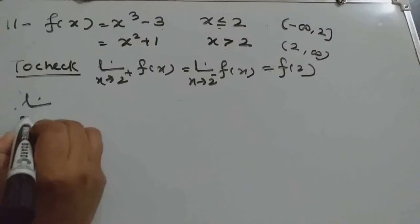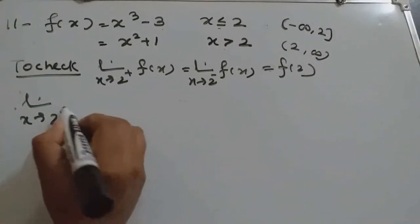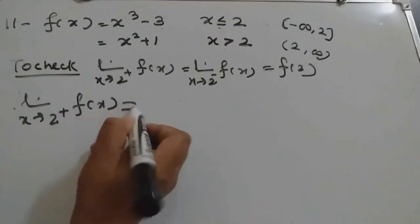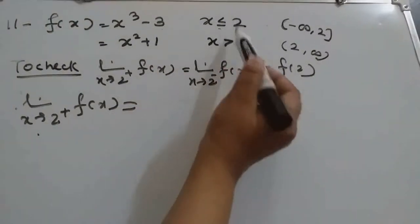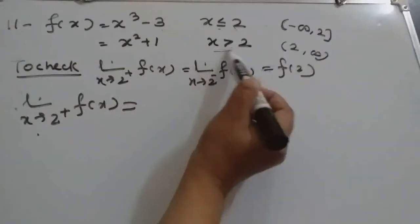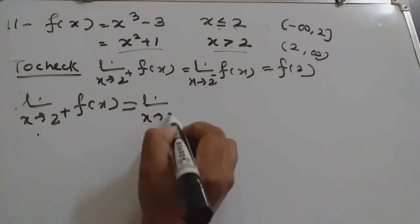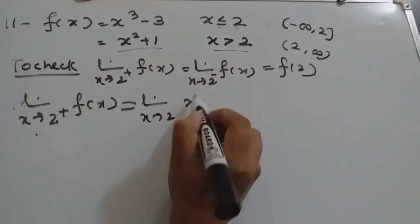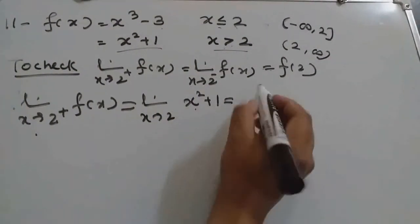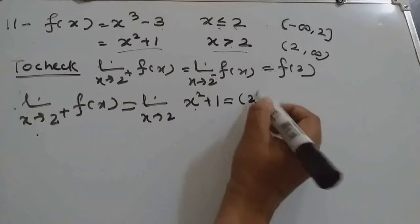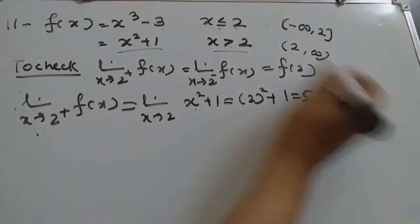We will find limit x tends to 2 plus f(x). 2 plus means the value of x is greater than 2. So we use the second function, where x is greater than 2. We substitute the value: 2 squared plus 1, that is 5. This is equation 1.